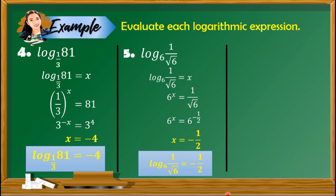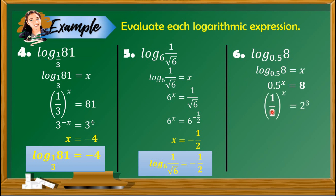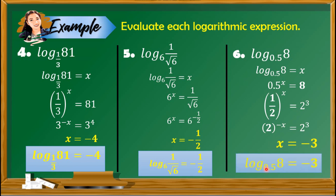Find the value of log base 0.5 of 8. Let x be the value, convert to exponential form: 0.5 raised to x equals 8. Change the decimal to a fraction: 0.5 equals 1/2, so we have 1/2 raised to x equals 2 raised to 3. Apply the negative exponent rule to convert 1/2 to base 2: we get 2 raised to negative x equals 2 raised to 3. Equating exponents and multiplying both sides by negative 1, x equals negative 3. So log base 0.5 of 8 equals negative 3.